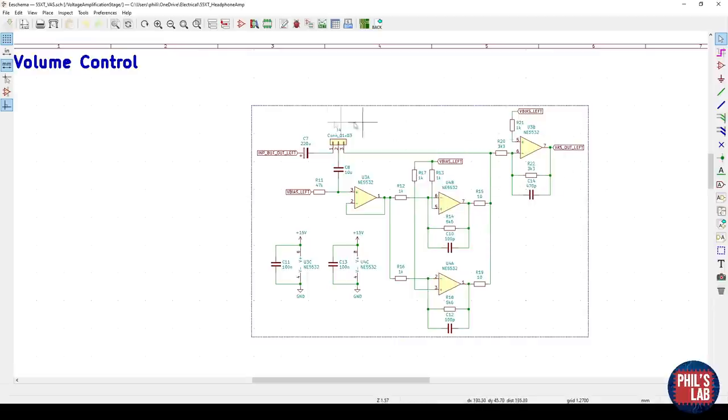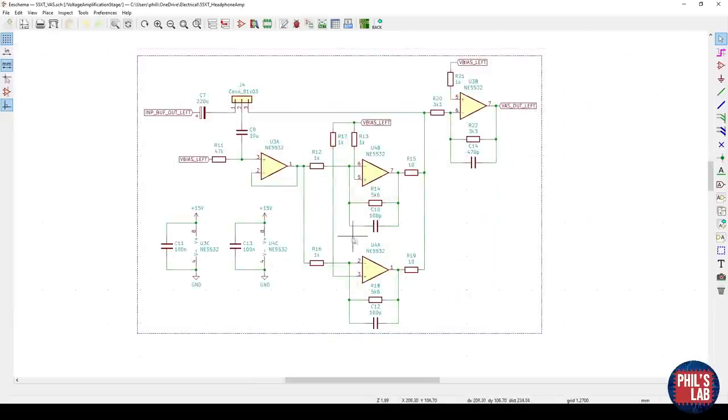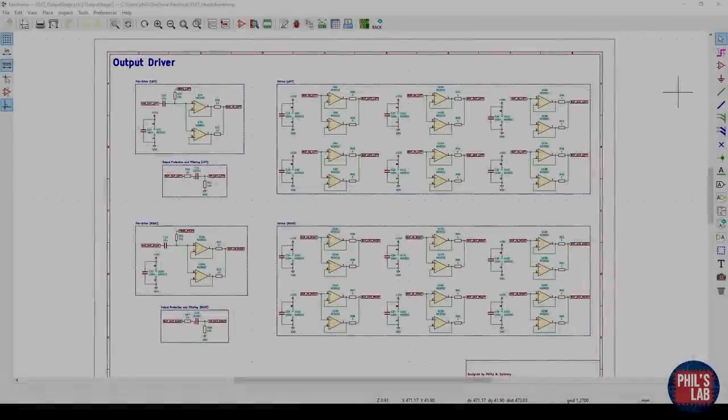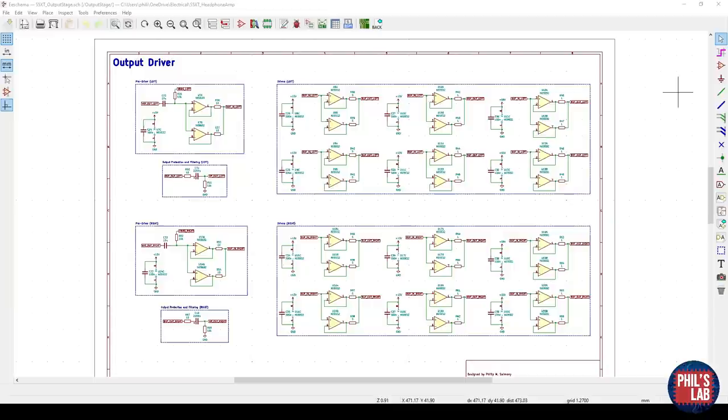And finally we have some sort of output buffer which again inverts the signal, because remember the Baxandall active volume control is naturally inverting, so I'm inverting the signal again to remain the same phase as the input and the output. Some small notes: we have capacitors C10, C12 and C14, and these are there to ensure HF stability as they form a low pass filter with the parallel resistances. Additionally, the maximum gain is set by R14 over R12 as well as R18 over R16, so 5.6 over 1, which is a gain of 15 at the maximum.